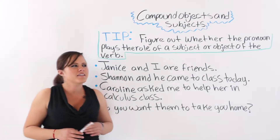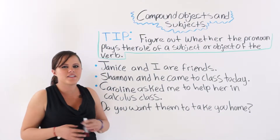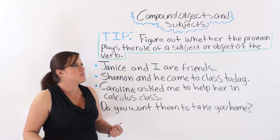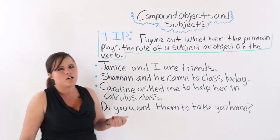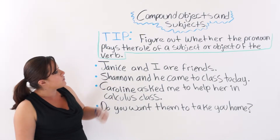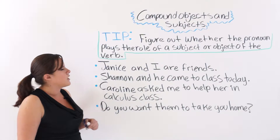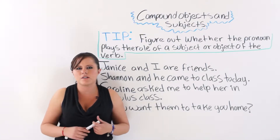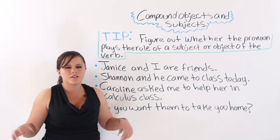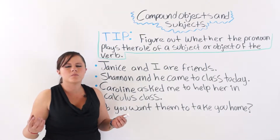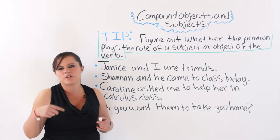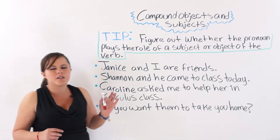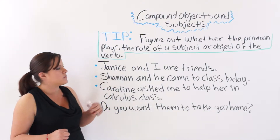Hello students, welcome to this class. My name is Faby Fitzgerald, and in today's lesson I will be talking to you about compound objects and subjects. A tip to identify if it's a compound object or a compound subject is to figure out whether the pronoun plays a role of a subject or object of the verb. A compound object and subject occurs when there is more than one pronoun, or a pronoun is combined with another pronoun or noun.